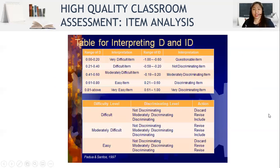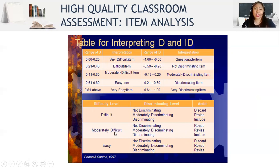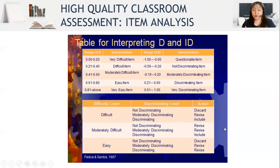There is also this table, which I used in the demonstration. If an item is easy and not discriminating, we discard or reject it. If it is easy and moderately discriminating, we revise it. If it is easy but discriminating, we still revise it. If it is moderately difficult and not discriminating, we revise it. If moderately difficult and moderately discriminating, we revise it. If moderately difficult and discriminating, we retain it. If difficult and not discriminating, we discard it. If difficult and moderately discriminating, we revise it. And if difficult and discriminating, we retain it. This is from Padua and Santos (1997).